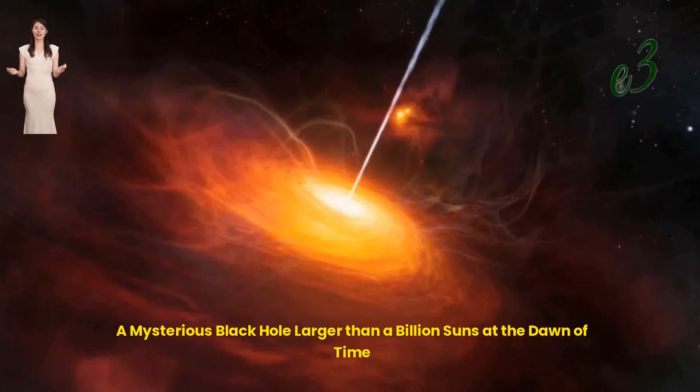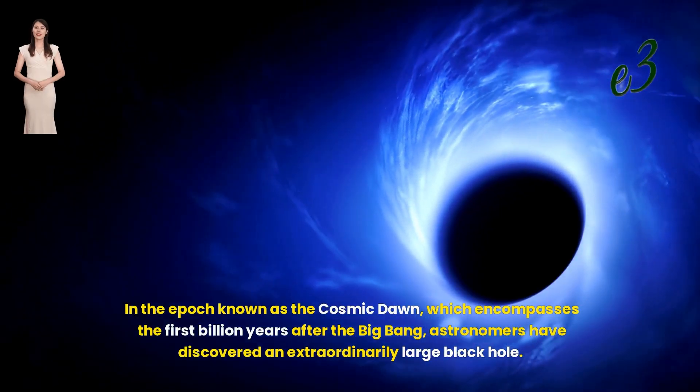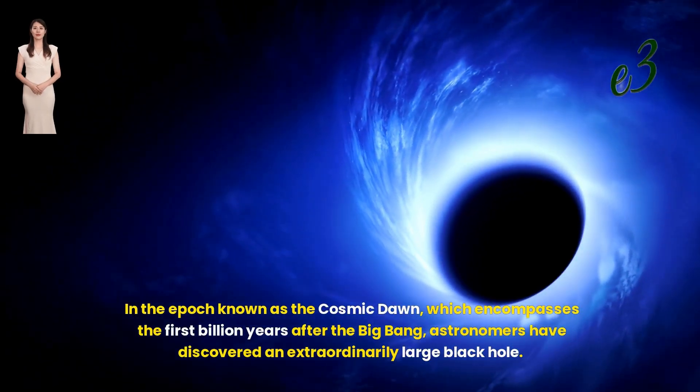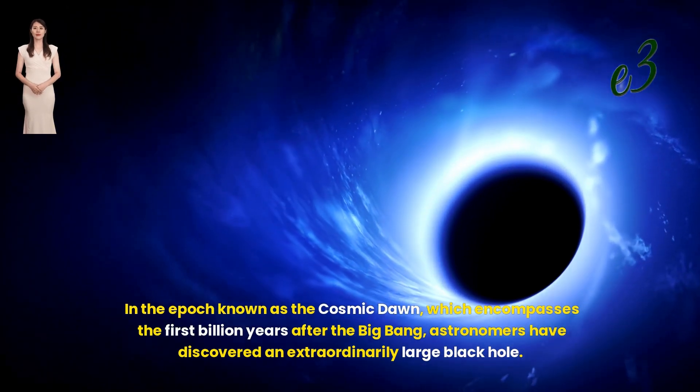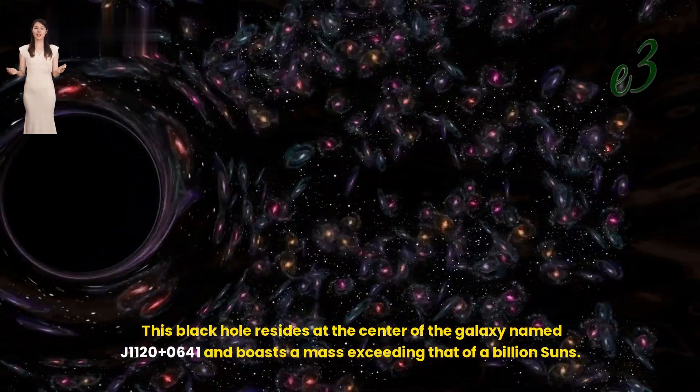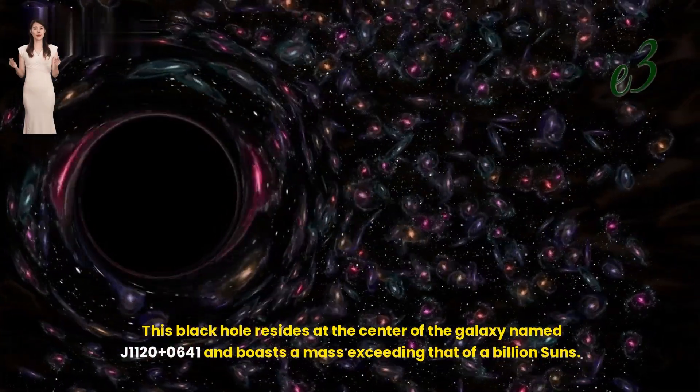A mysterious black hole larger than a billion suns at the dawn of time. In the epoch known as the cosmic dawn, which encompasses the first billion years after the Big Bang, astronomers have discovered an extraordinarily large black hole. This black hole resides at the center of the galaxy named J1120+0641 and boasts a mass exceeding that of a billion suns.